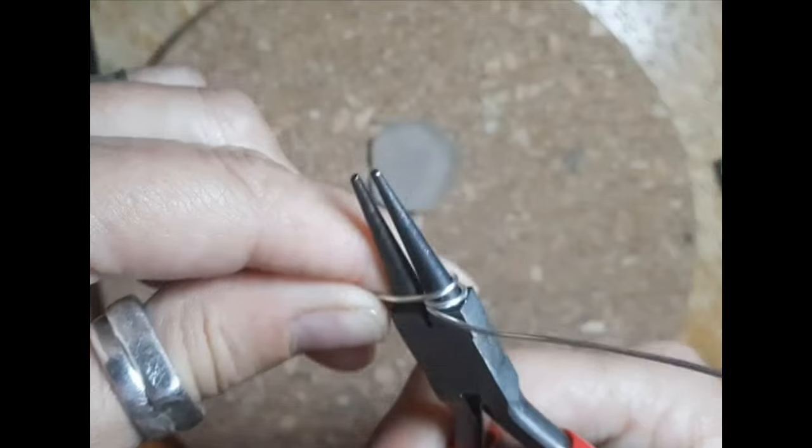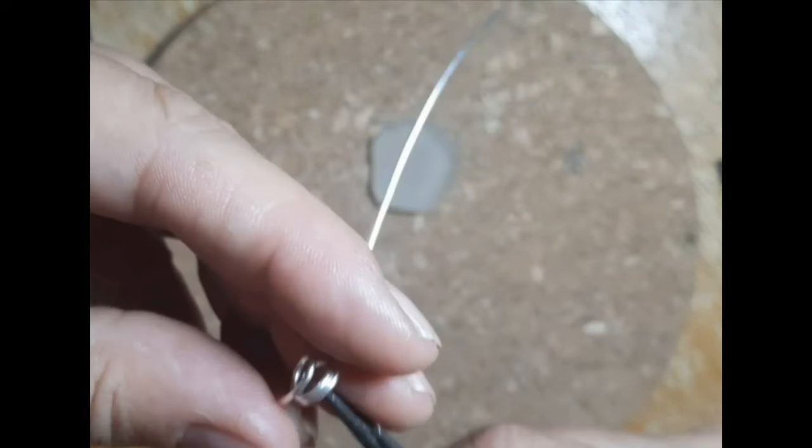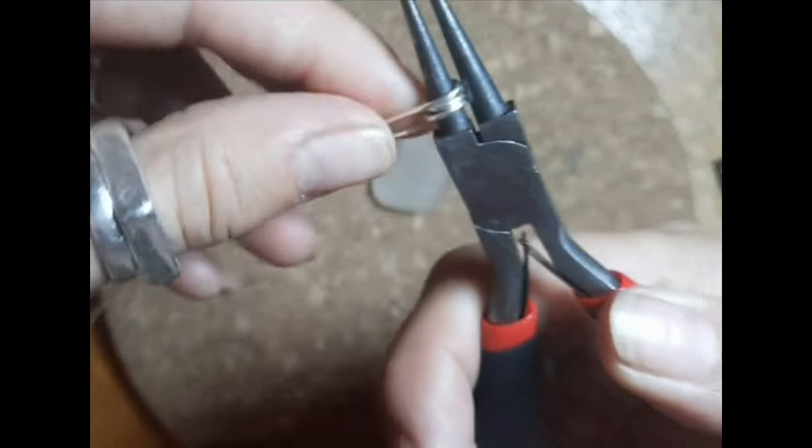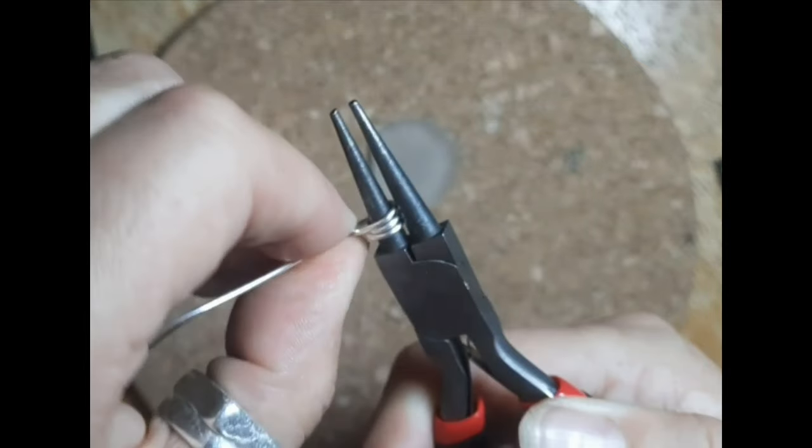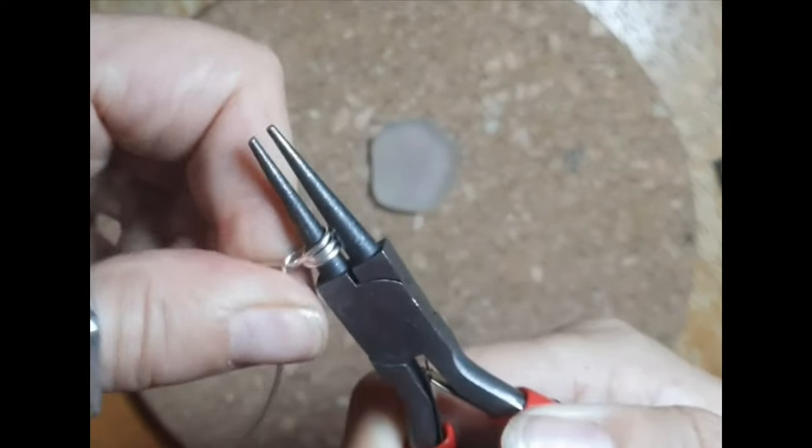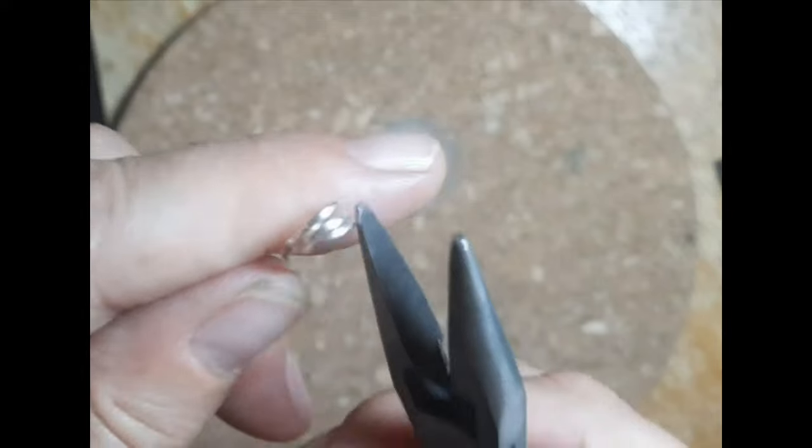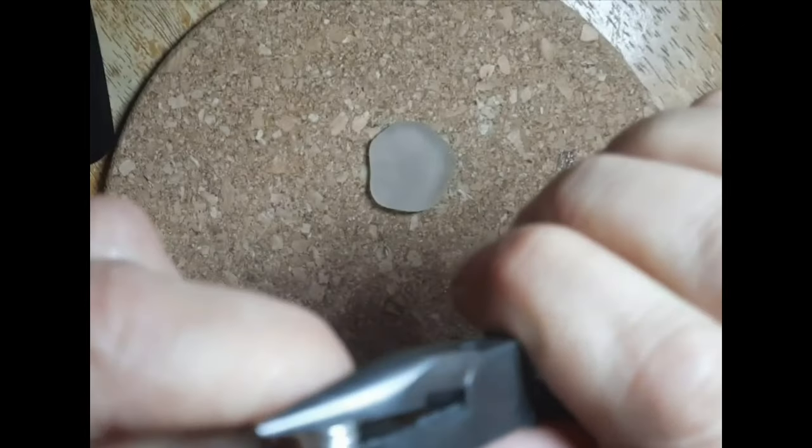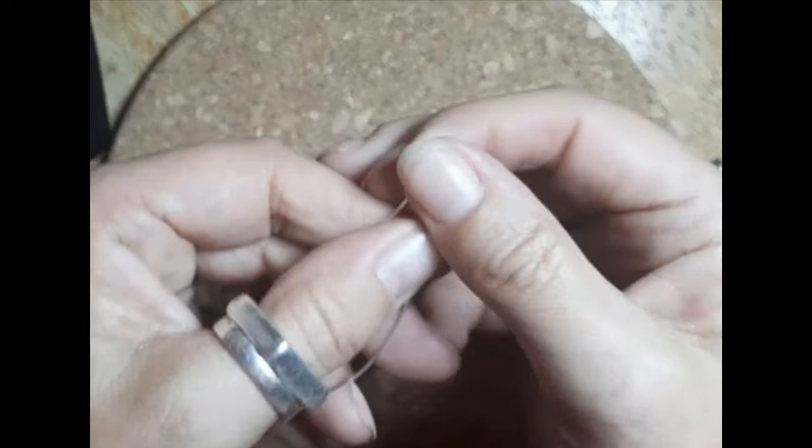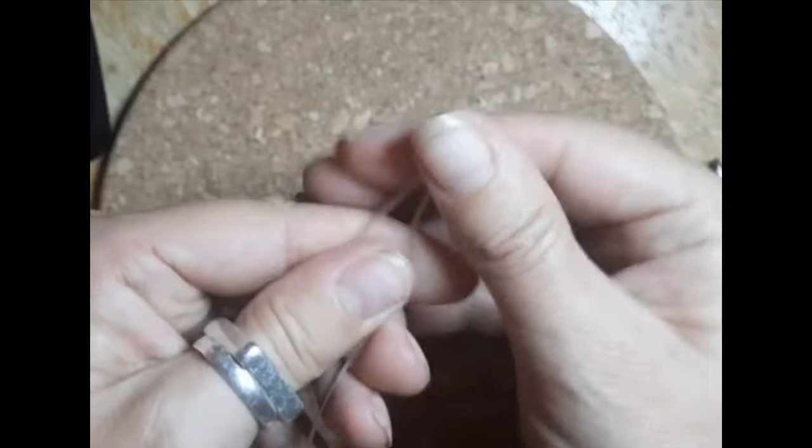Then twist the two ends together to hold them in place. You can straighten this out with your flat nose pliers, and then you have the loop at the top. Straighten out the pieces of wire.